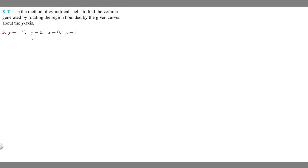In this problem, we're told to use the method of cylindrical shells to find the volume generated by rotating the region bounded by the given curves about the y-axis. This is number five, and we're given the curve y equals e to the minus x squared, y equals zero, x equals zero, and x equals one.